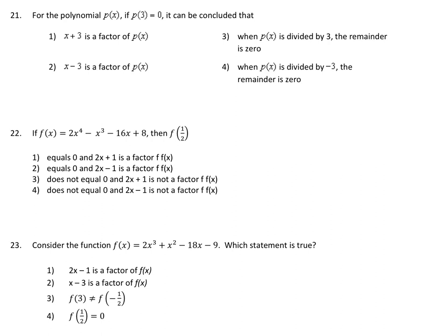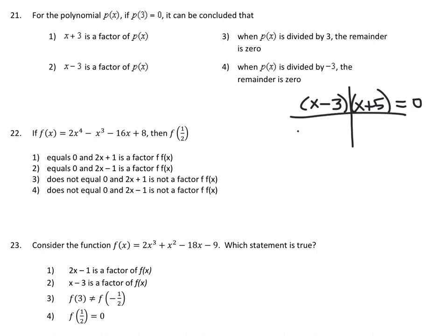Number twenty-one requires knowing the remainder theorem or factor theorem. If p(3) = 0, then x = 3 is a zero of the function, which means x − 3 is a factor. For example, if x − 3 and x + 5 are factors, then x = 3 and x = −5 are zeros. So if x = 3 is a zero of our function, x − 3 is its factor. Choice two is the answer.